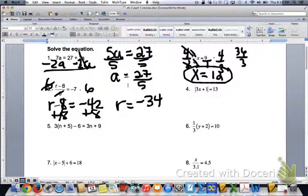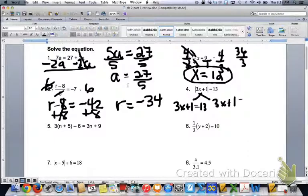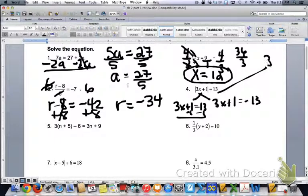Number four is an absolute value. You need to remember, when you have an absolute value, there are two solutions. What's inside that, 3x plus 1, could equal 13, or it could equal negative 13. On the left, we subtract 1. You get 3x equals 12. I'm going to finish it up here. 3x equals 12. Divide by 3. So x equals 4.